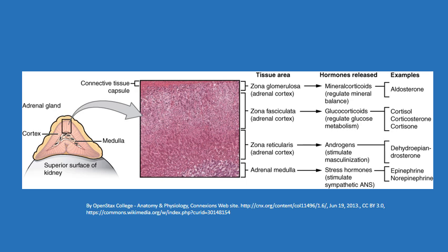Then lastly we have the zona reticularis, which produces androgens. It's not entirely clear how the zona reticularis fits into the stress response. What it appears to do is produce precursors to some of the other androgens — and actually precursors of estrogens as well. These precursors travel in the blood to whatever target tissue needs them, where enzymes convert the precursors into the appropriate active hormone.